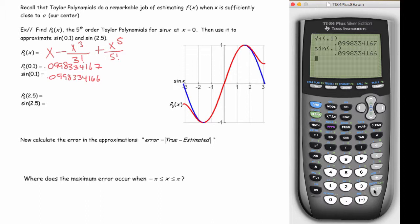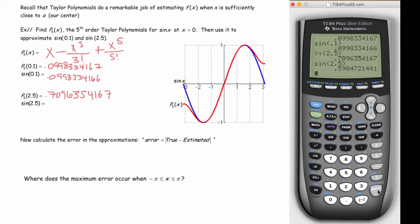2.5 is definitely farther from zero. Let's see how good a job it does. So again, I'm going to do y1 of 2.5. So I got 0.7096354167. And when I do sine of 2.5, I get 0.5984721441. So already you can see that it's doing a poorer job at approximating a value that's not close to zero.